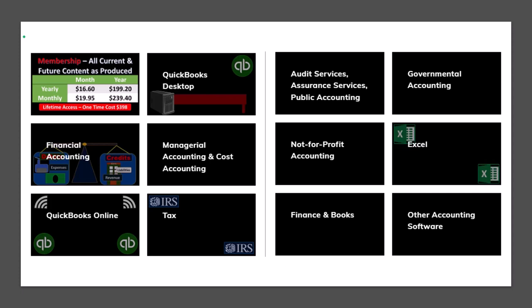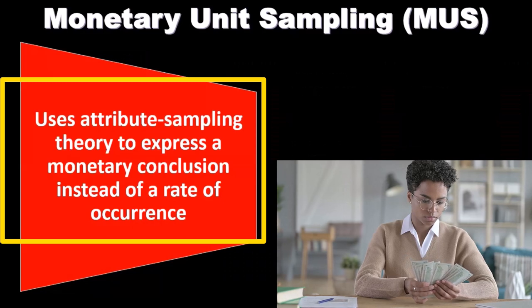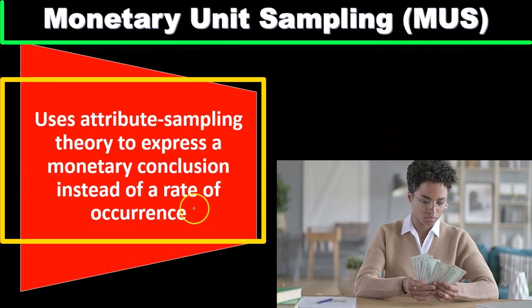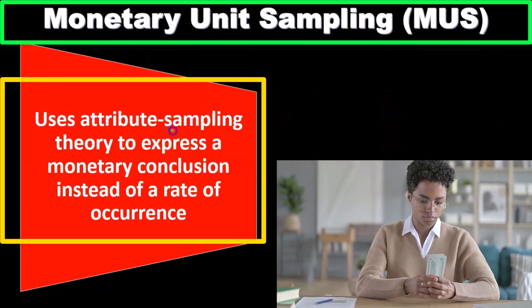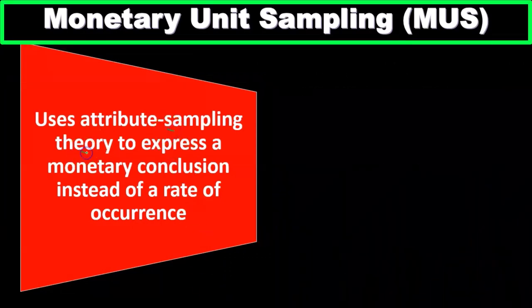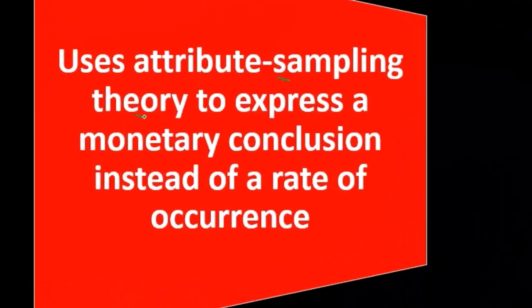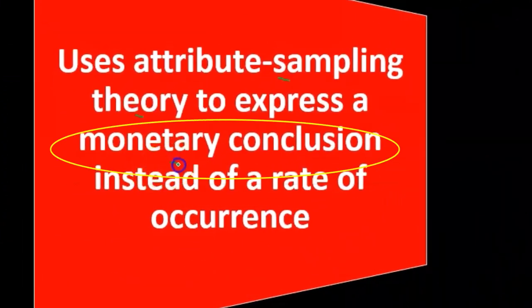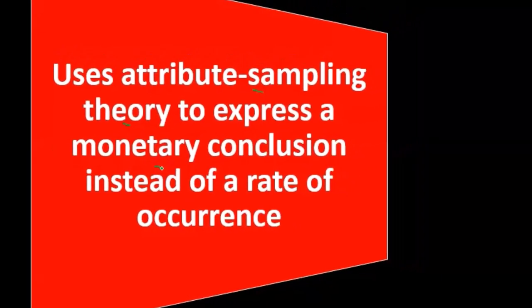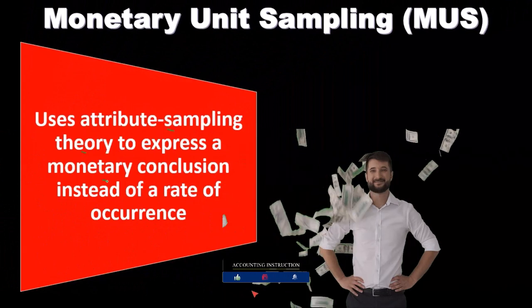Courses which are well-organized have other resources like Excel files and PDF files to download and no commercials. Monetary unit sampling uses attribute sampling theory — we're going to use those attribute sampling theories, but now we're going to express monetary conclusions, basically dollar amount conclusions, instead of a rate of occurrence type of conclusion.